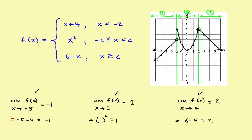The problems come in when you approach the split points. As you get closer and closer to negative 2, the function from the left is possibly different than the function from the right. To handle this, you'll need a new definition of limits using one-sided limits. So before we go on, let's take a quick look at those.